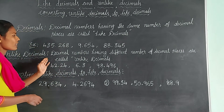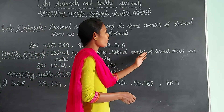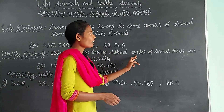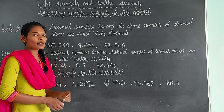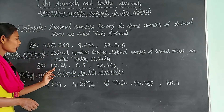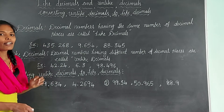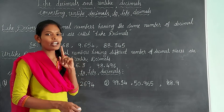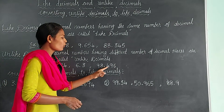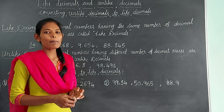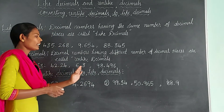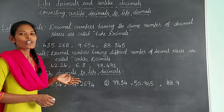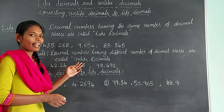Now let us know about unlike decimals. Decimal numbers having different number of decimal places are called unlike decimals. Let us see the examples. 42.24 has 2 decimal places. And 6.3 has only 1 decimal place. And 98.496 has 3 decimal places. Observe these 3 decimals — they have different decimal places, so these type of decimals are known as unlike decimals.